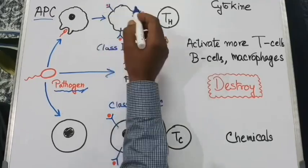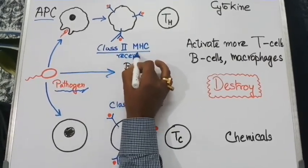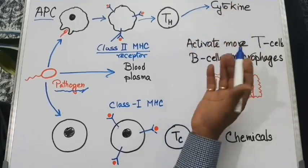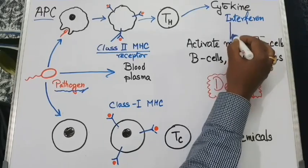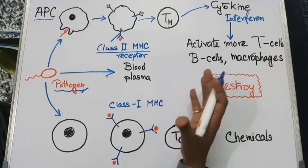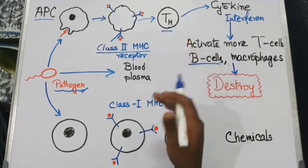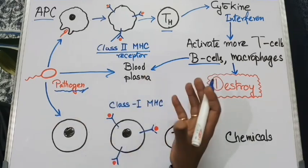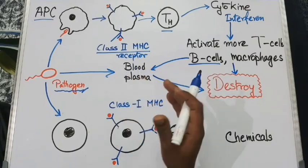The APC expresses the antigenic portion of the pathogen on its cell membrane using a special receptor called the class 2 MHC molecule. This activates the TH cell (T helper cell), which secretes a special chemical called cytokine (also known as interferon). This cytokine activates more T cells, B cells, and macrophages at the site of reaction, creating a large immune response. The activated B cells then produce large amounts of antibodies that bind to and mark pathogens freely floating in the blood, helping to destroy them.